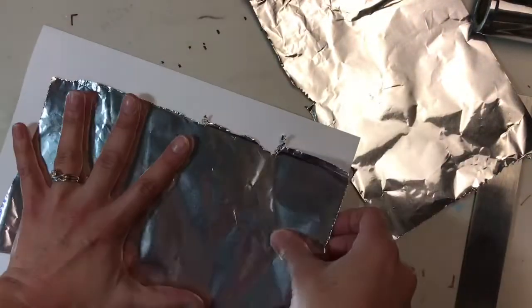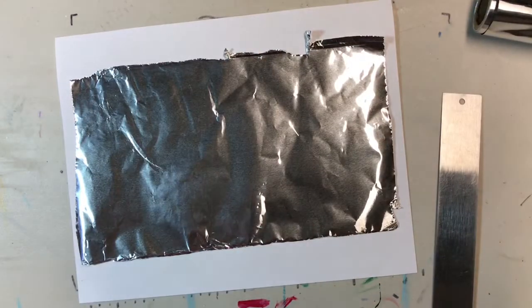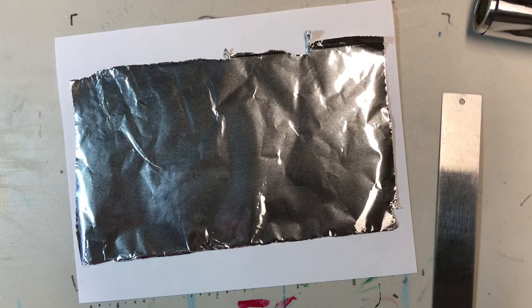So now I'm going to place this on my paper. I'm going to place it in the center. I want the shiniest side upward. Now you guys can experiment and see what the other side does, but I want the shiny side up.